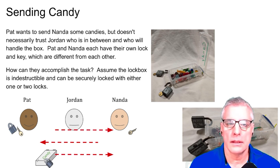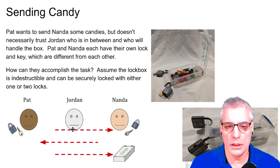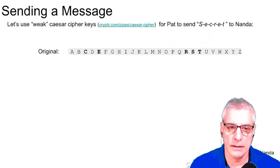And then once Nanda gets it, then Nanda can take Nanda's lock off and open the candy box and successfully pass the candy across the line here from Pat to Nanda. And the person in the middle, Jordan, can't access the candy, can't get it. So this same idea, we're going to do this with the text transposition thing that we talked about earlier with Caesar's cipher as an example.